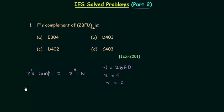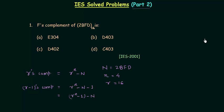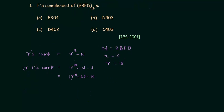In case of r minus 1's complement, we have r raised to power n minus capital N minus 1, or we can write it as r raised to power n minus 1 minus capital N. Now we will put the values: we have 16 raised to power 4, because r is 16 and n is 4, minus 1 minus 2bfd.